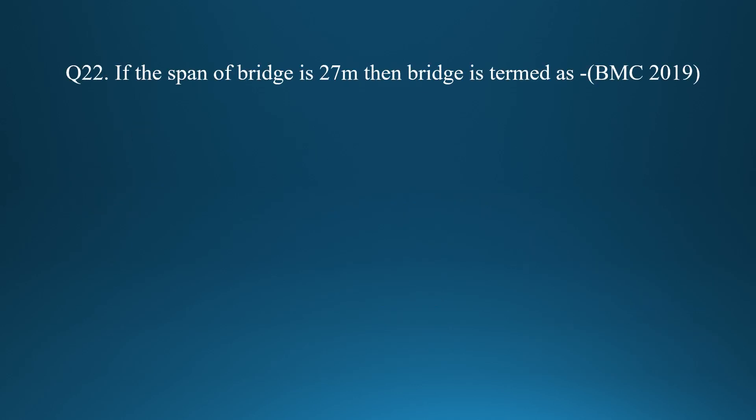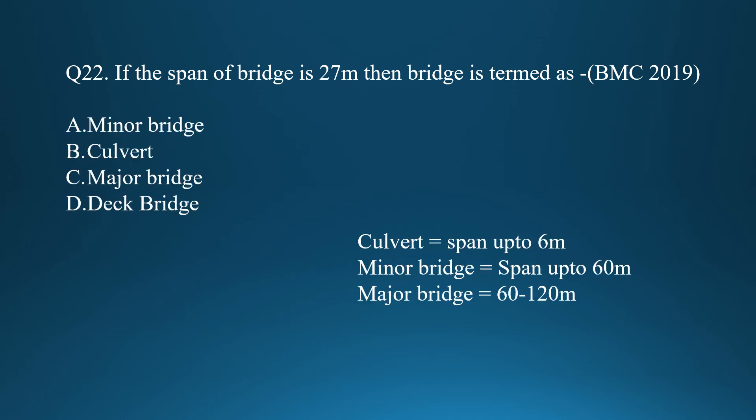Question twenty-one: if the span of a bridge is 27 meters, it is termed a minor bridge. The classification is: up to 6 m span — culvert; up to 60 m span — minor bridge; 60 to 120 m — major bridge. Since 27 m falls in the minor bridge range, option A is correct.